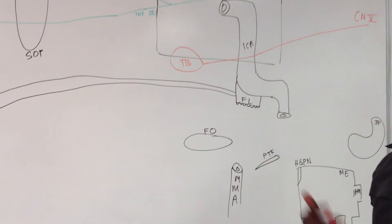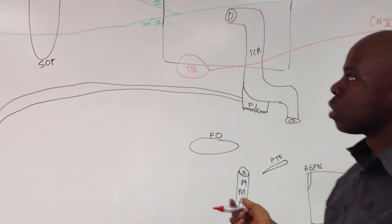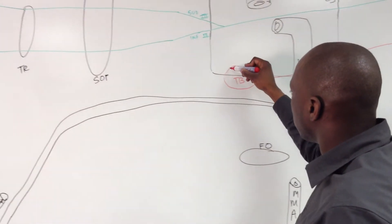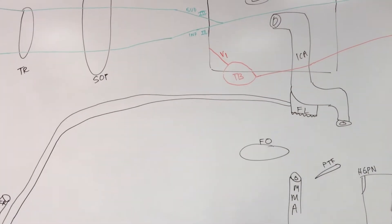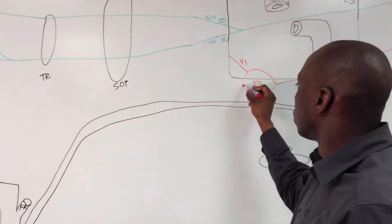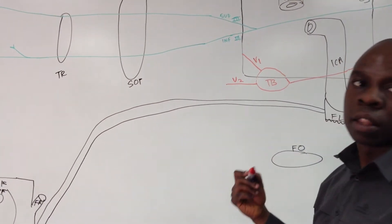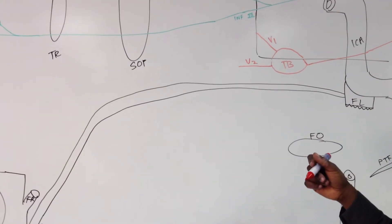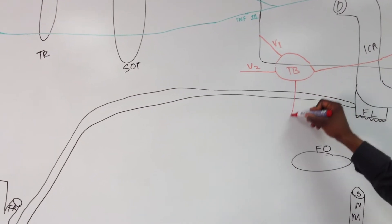From the trigeminal bulb we get divisions — there are three divisions. There's the ophthalmic division, which is V1, which leaves like that. There's the maxillary division, which is V2, which leaves like that. And finally you have the mandibular division, which is V3, which leaves like that.